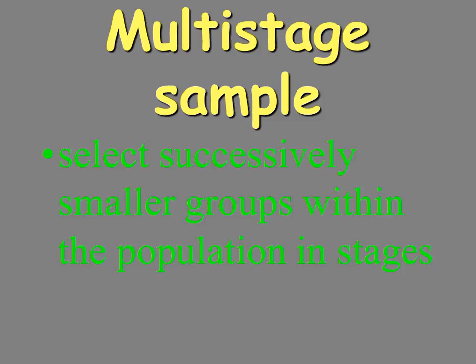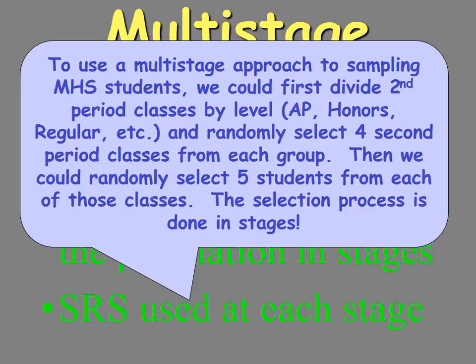And then we have a multi-stage sample. This involves selecting successively smaller groups within the population in stages, randomly selecting at each level. We could start with the entire United States, randomly select a few states, and then within those states randomly select a few counties. But you have to use a simple random sample at each of those stages. For example: divide second-period classes by level, randomly select four second-period classes from each group, then randomly select five students from each of those classes.